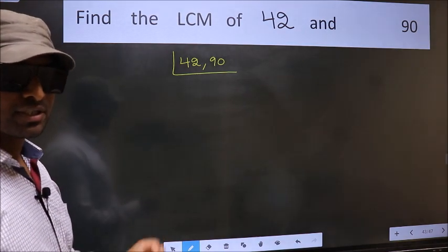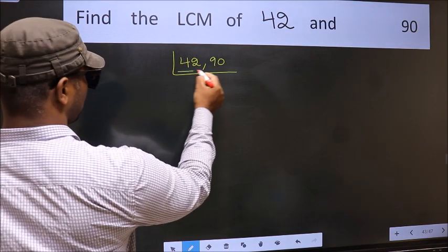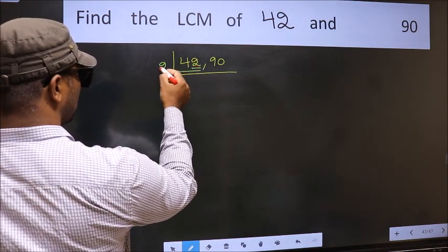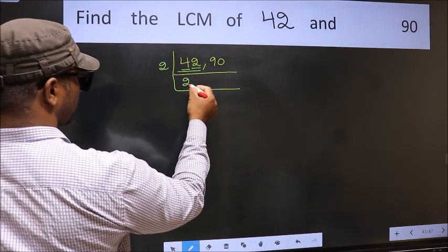Now you should focus on the first number which is 42 here. For this number, last digit 2, even, so take 2. First number 4, when do we get 4 in 2 table? 2 times 2 is 4.